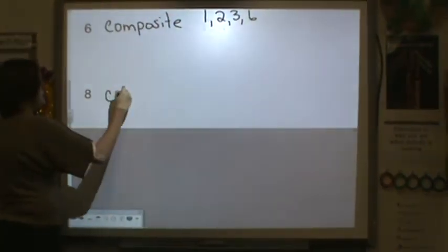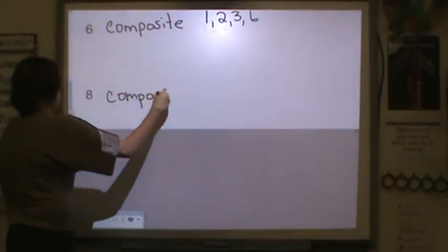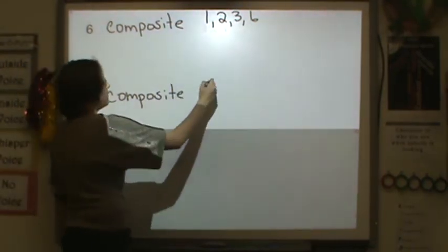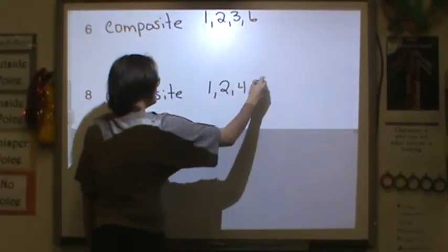8 is composite. It has more than two factors: 1, 2, 4, and 8.